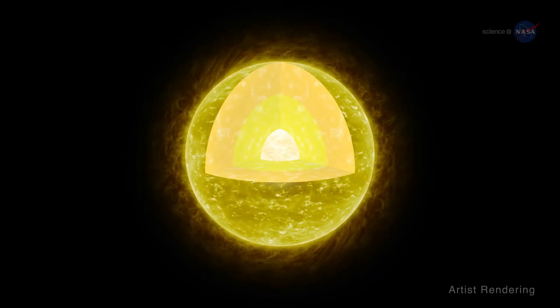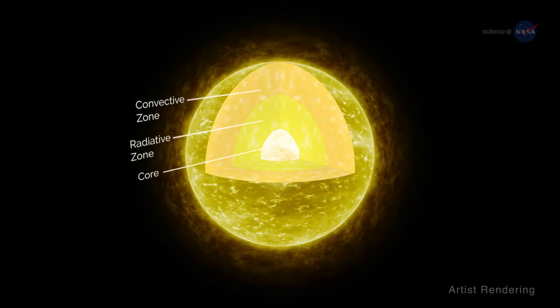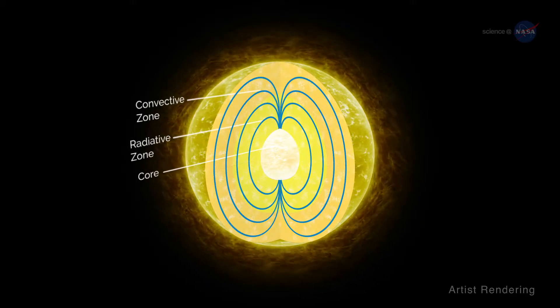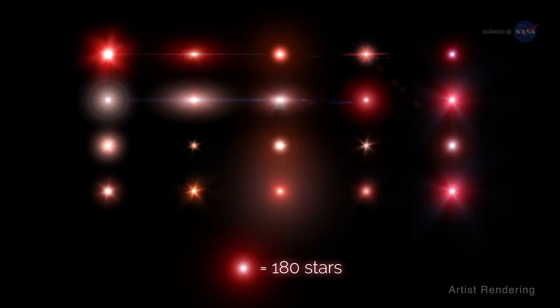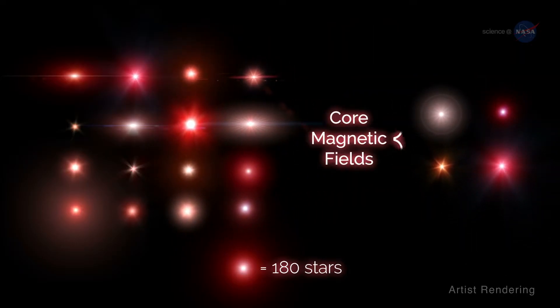Astro-seismologists analyze brightness fluctuations to study the interior structure of stars, including the strength and distribution of magnetic fields deep below the stellar surface. This is exactly what Stello and colleagues did using Kepler observations of 3,600 red giant stars. Stello says about 60% of the sample showed evidence of strong internal magnetic fields, and about 20% have strong magnetic fields all the way down in the core.